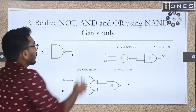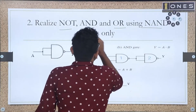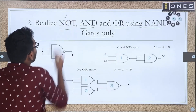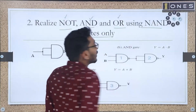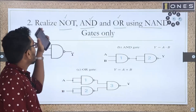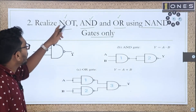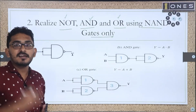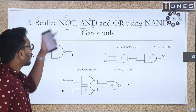The next question: Realize NOT gate, AND gate, and OR gate using NAND gates only. A NOT gate is basically a complementing operation — 1 becomes 0 and 0 becomes 1. An AND gate outputs high only when all inputs are high.